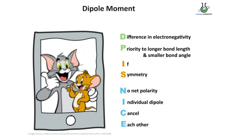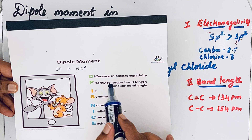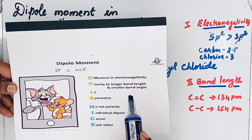D stands for difference in electronegativity, P for period — longer bond length and smaller bond angle. S stands for symmetry — no net polarity, as individual dipoles cancel each other. These are the key factors captured in the mnemonic.